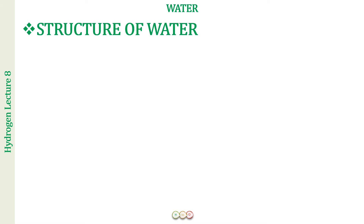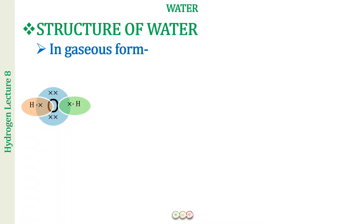Next we discuss the structure of water, which is essentially a revision of what you studied in chemical bonding. We will discuss it in three parts: gaseous state, liquid state, and solid state. In the gaseous state, molecules are far away from each other and exist as individual molecules. The Lewis structure of water has oxygen in the center with six valence electrons forming two covalent bonds with hydrogen, giving two bonded pairs and two lone pairs of electrons.